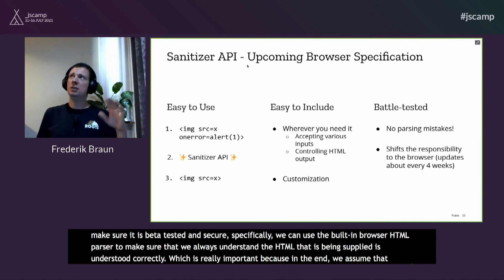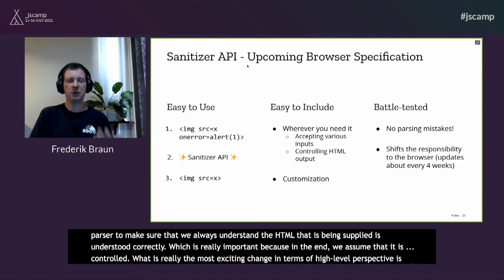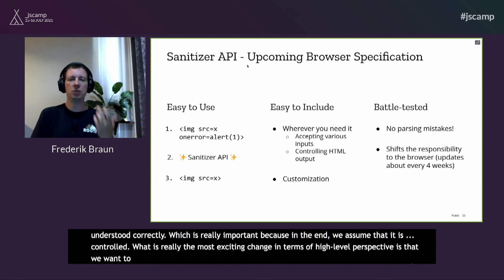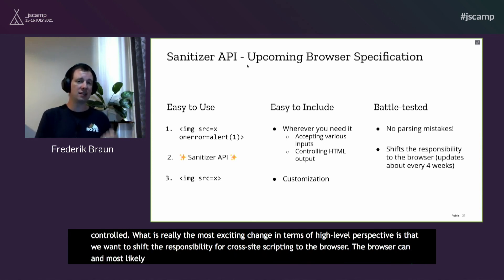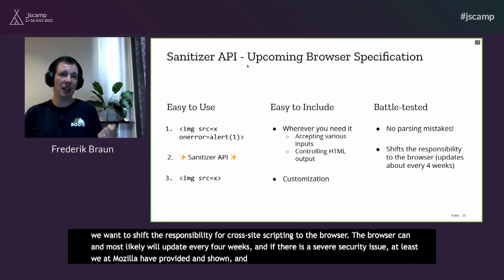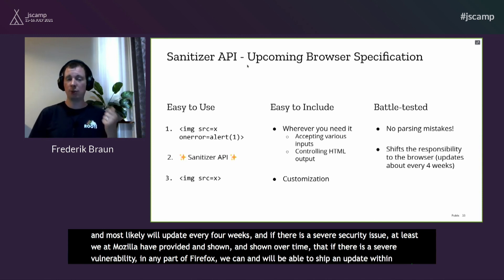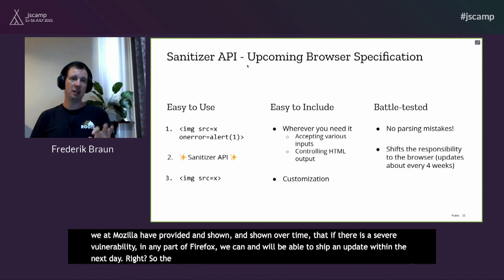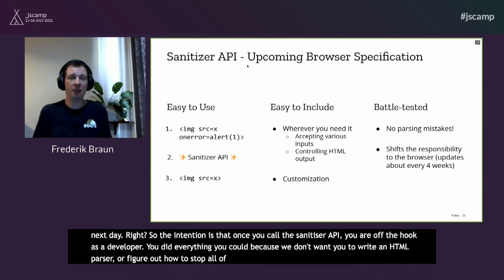What excites me as a security engineer is that we can rely on existing primitives in the web platform to make sure this is battle-tested and secure. Specifically, we use the built-in browser HTML parser to ensure HTML being supplied is always understood correctly — important because we assume it's attacker-controlled. The most exciting high-level change is shifting the responsibility for cross-site scripting to the browser. The browser updates every four weeks, and Mozilla has shown it can ship security updates within a day for severe vulnerabilities. Once you call the Sanitizer API, you're off the hook as a developer — we don't want you to write an HTML parser to solve all of XSS.